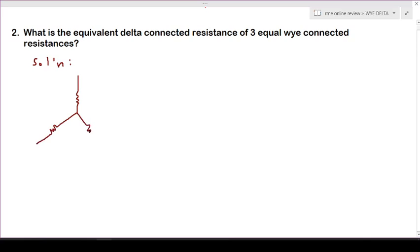And another one here. Okay, so let's call them as Ry, so the three of them are all Ry because they are equal.